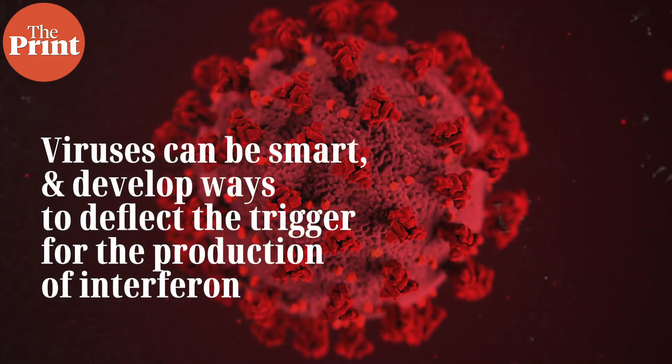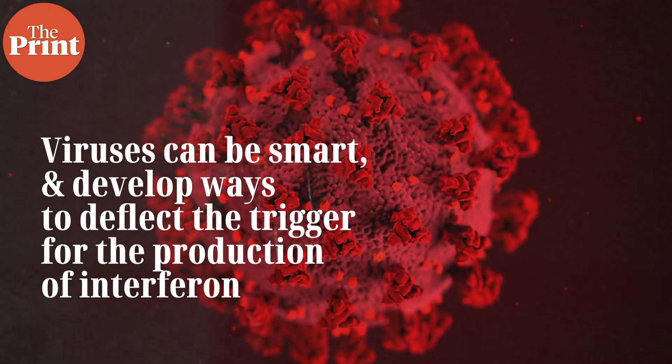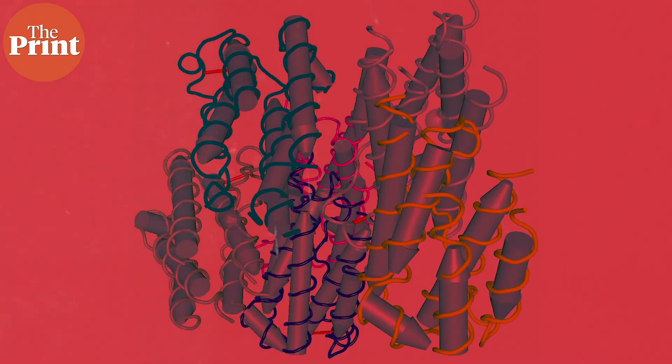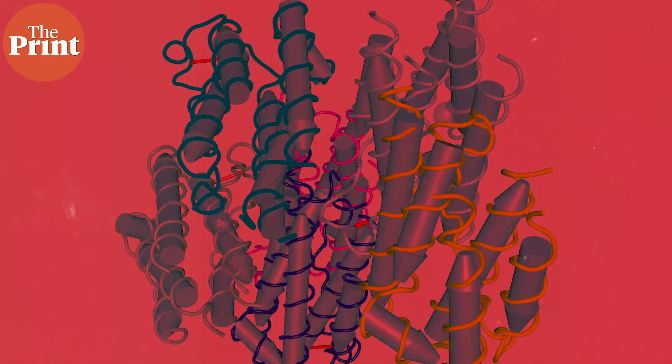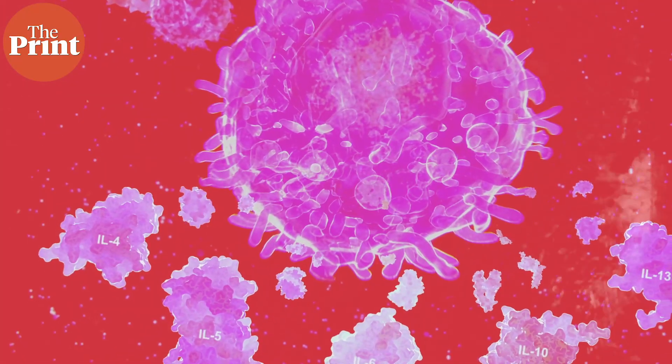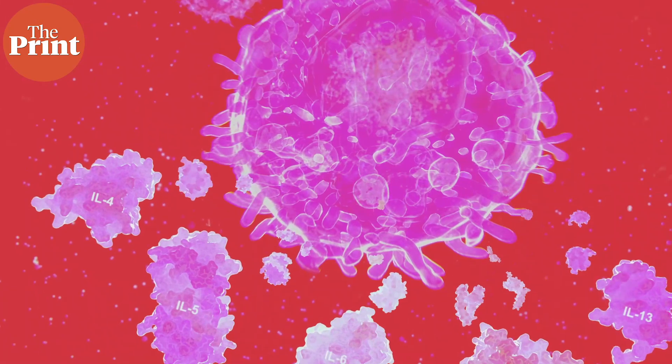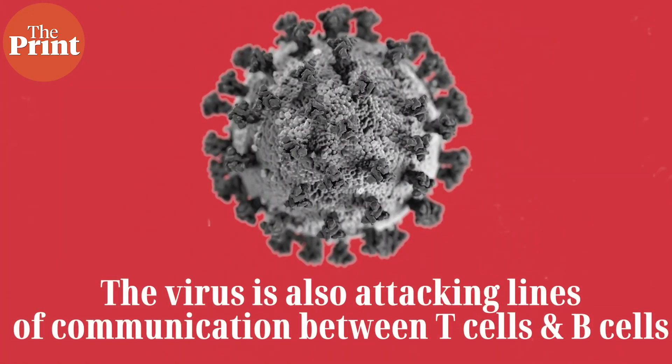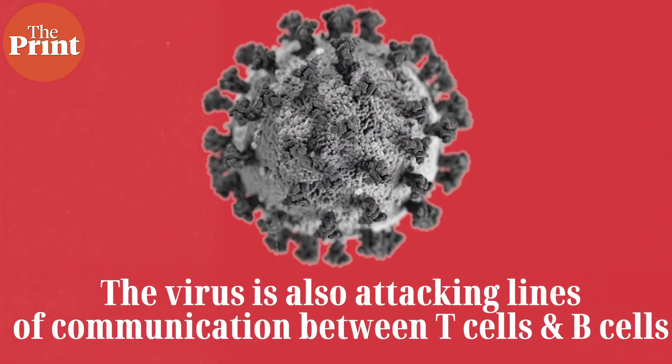It is thought that these immunological missteps occur because viruses can be smart — they've developed ways to deflect the trigger for the production of interferon, which is one of the earliest cytokines produced by the immune response. The body can still feel cells being destroyed by the virus, so it amps up cytokine production, which then leads to an out-of-control cascading effect.